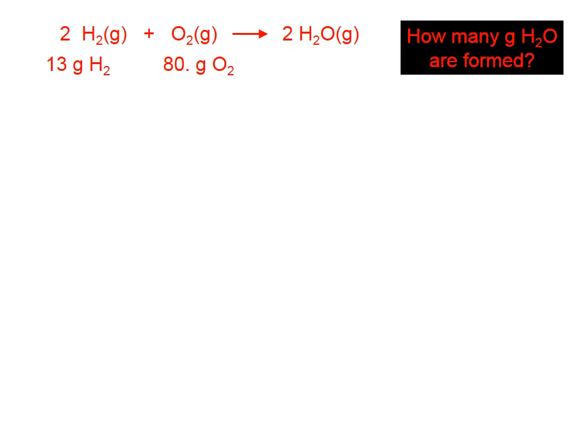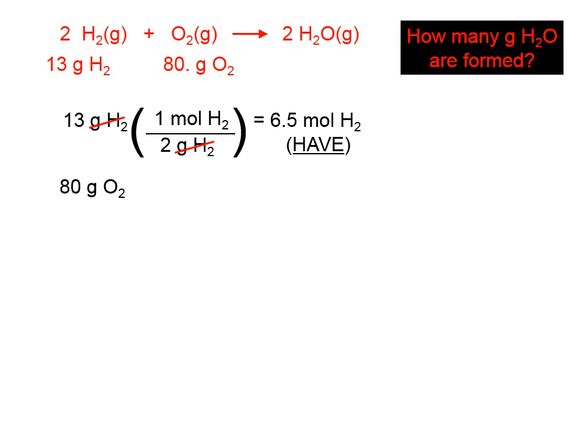So there are several ways to find the limiting reactant. And I'm going to use the method that I talked about on the previous slide. We're going to convert all of the reactant amounts into moles. From the periodic table, the molar mass of H2 we can find to be 2 grams. Those units cancel. 13 divided by 2 is 6.5 moles of H2. And I write the word have underneath that, because that's how much we have to start with.